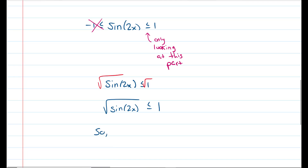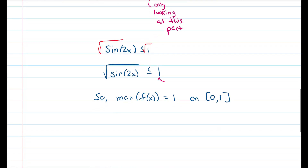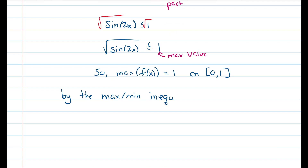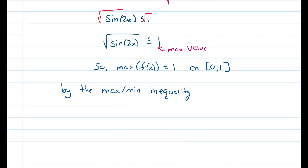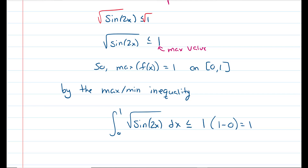The maximum of f of x is equal to 1 on the interval 0 to 1 — that is the max value. We get that the integral from 0 to 1 of the square root of sine of 2x dx is less than or equal to 1, the maximum, times b minus a, which is 1 minus 0, equaling 1, which is strictly less than 5 fourths.